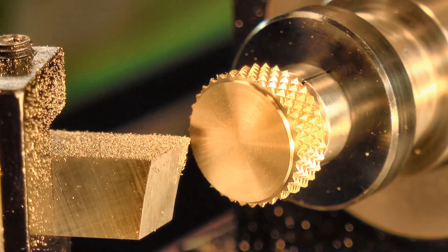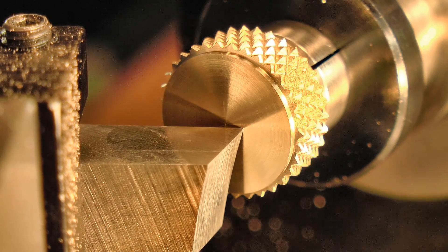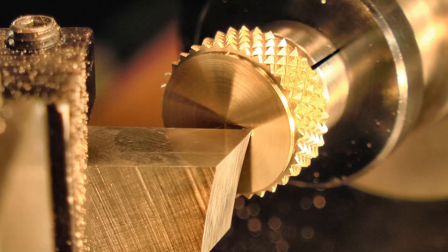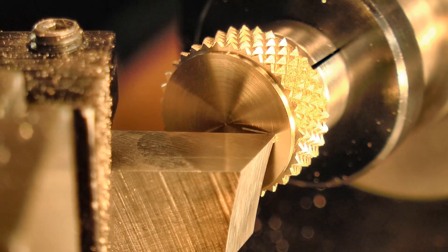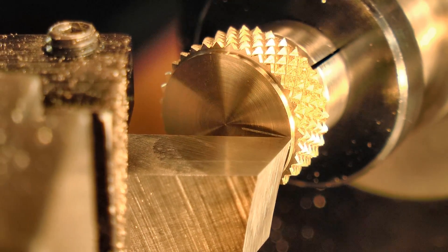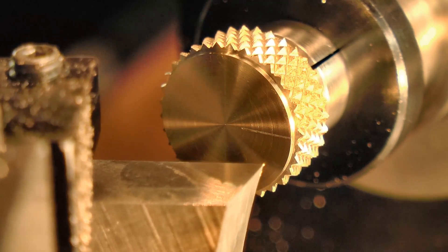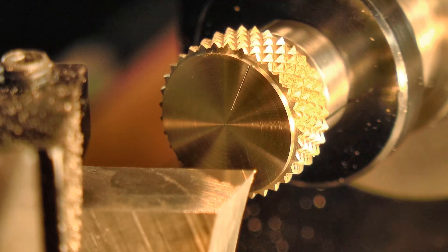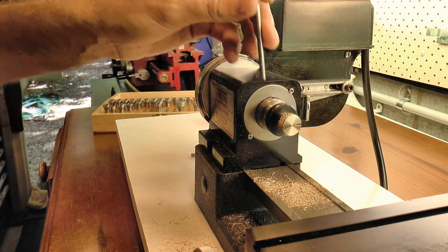The thumb wheel needs an indicator mark to show position, so I took care of that. And that's the machining of the thumb wheel complete.